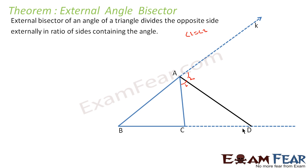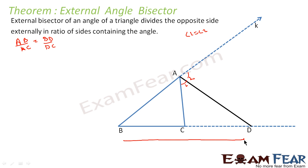Let this point be D. In such a case, the theorem says that AB by AC will be equal to BD by DC. To read it once again: the external bisector of angle A of triangle ABC divides the opposite side externally in the ratio of the sides containing the angle. AB by AC is equal to BD by DC — so externally it is dividing in this way.